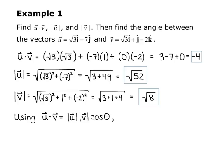So using u dot v equals the magnitude of u times the magnitude of v times cosine of theta, where remember theta is the angle between the two vectors. I'm going to plug in the numbers that I just found above. So negative 4 equals the square root of 52 times the square root of 8 times cosine theta.